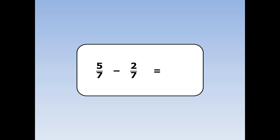5 sevenths take away 2 sevenths. We take away the numbers on the top and the number on the bottom stays the same. 5 take away 2 is 3, and the 7 stays the same.